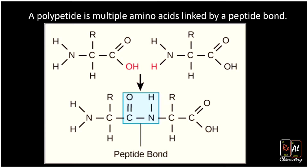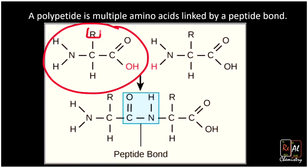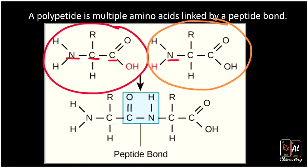Here below we see one amino acid — in this case our side chain is represented by R — and we see a second amino acid, so this orange and red amino acid are going to link up with each other. A couple things to notice: when we look at each of these amino acids they follow this really specific pattern: N-C-C, N-C-C.